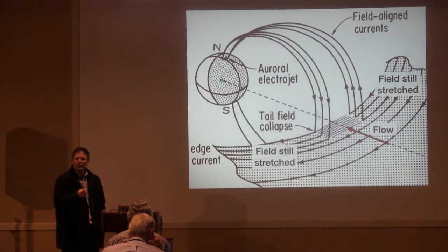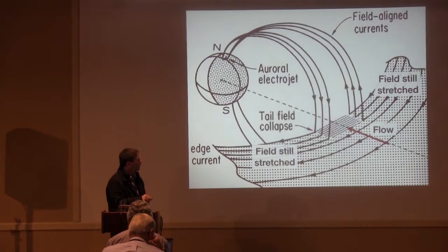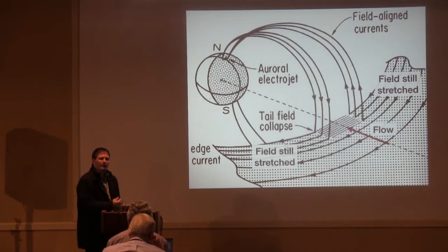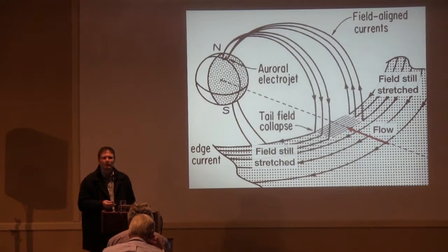Now dipolarization in this region occurs because these fast flows from the reconnection site come in carrying magnetic flux. They slow down very rapidly as they approach the Earth. And that flux then piles up, creates a partially dipolarized magnetic field. We call these flows, of course, bursty bulk flows or fast flows. Theorists call them flow interchange bubbles. They're exactly the same thing, just a different description, if you're a theorist or an observationalist.